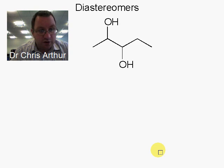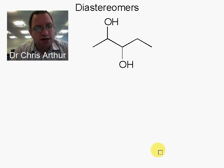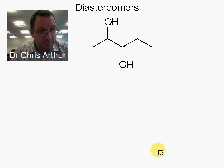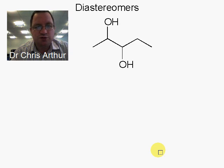You've already met diastereomers, we've just not called them diastereomers, in terms of geometric isomers of double bonds. Those are not enantiomers, but they are stereoisomers. So those are diastereomers.